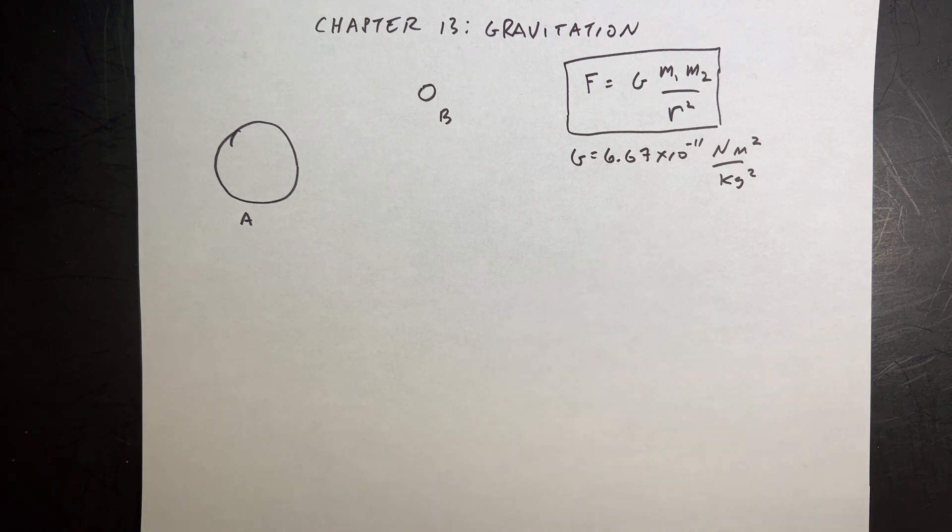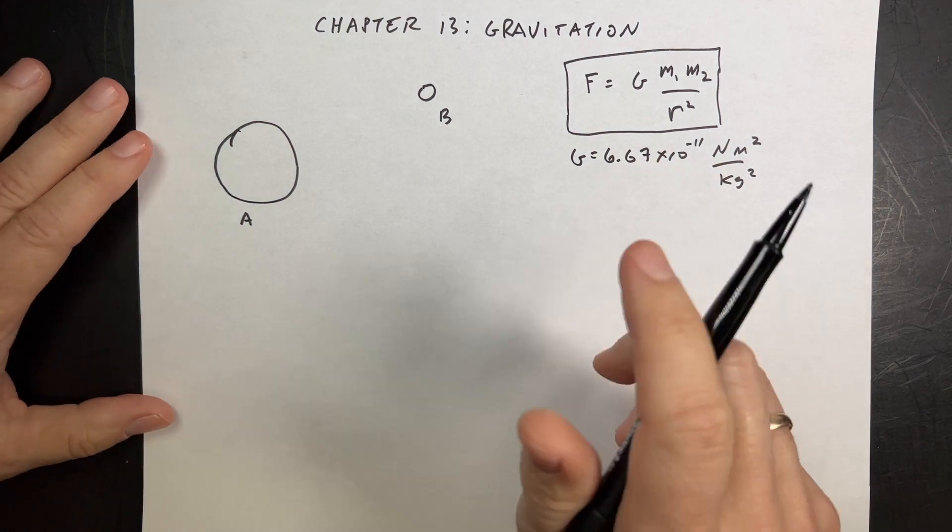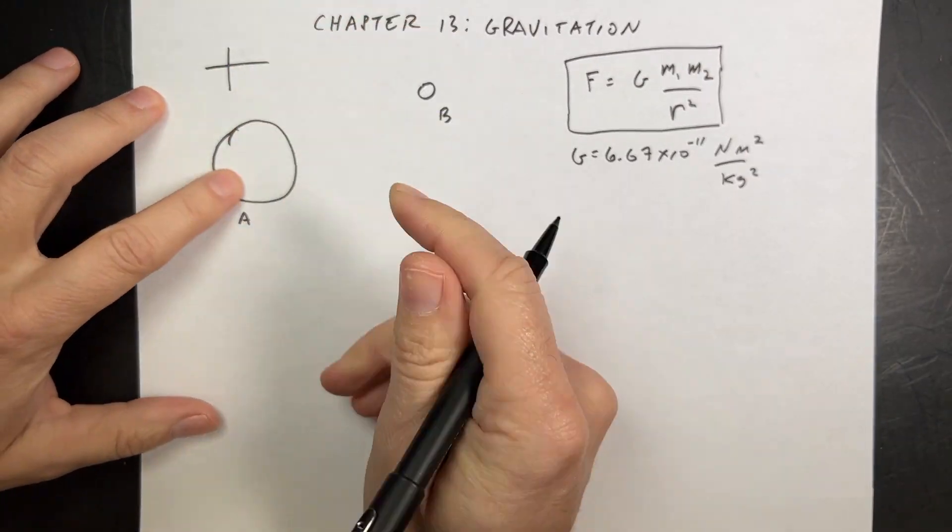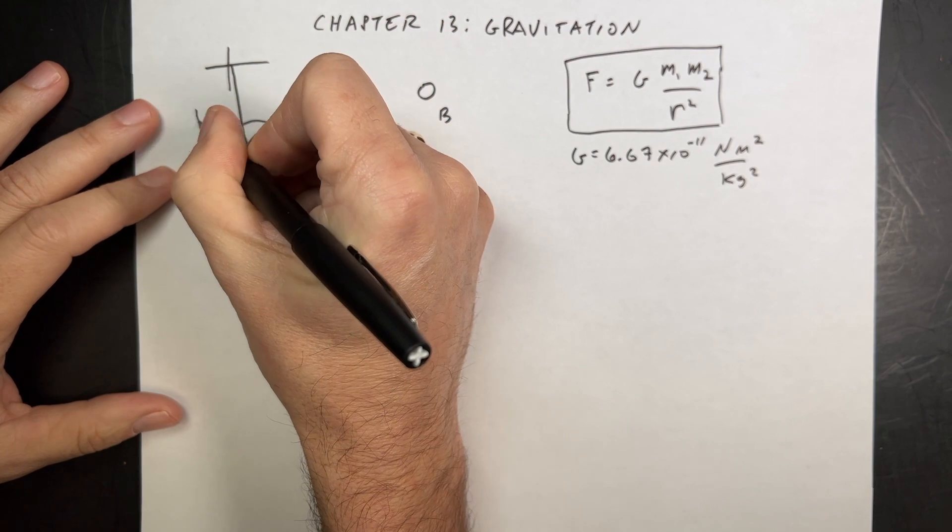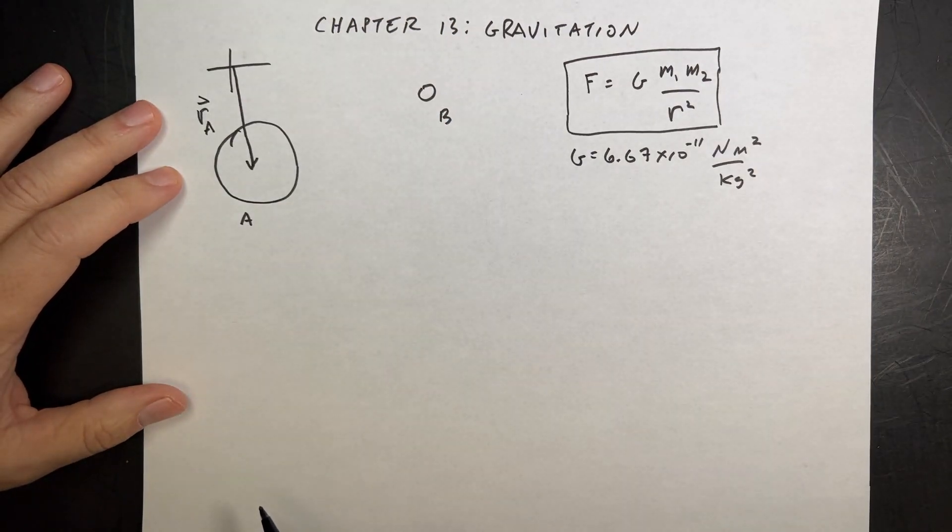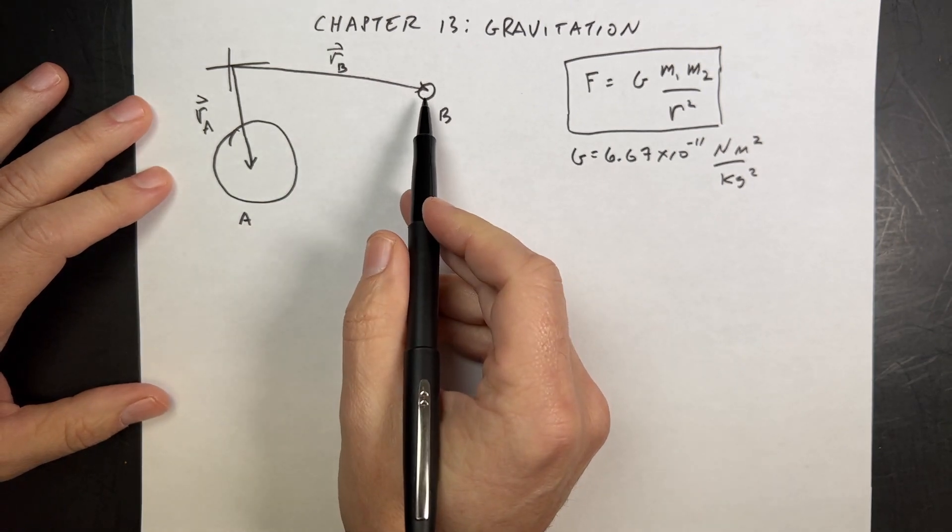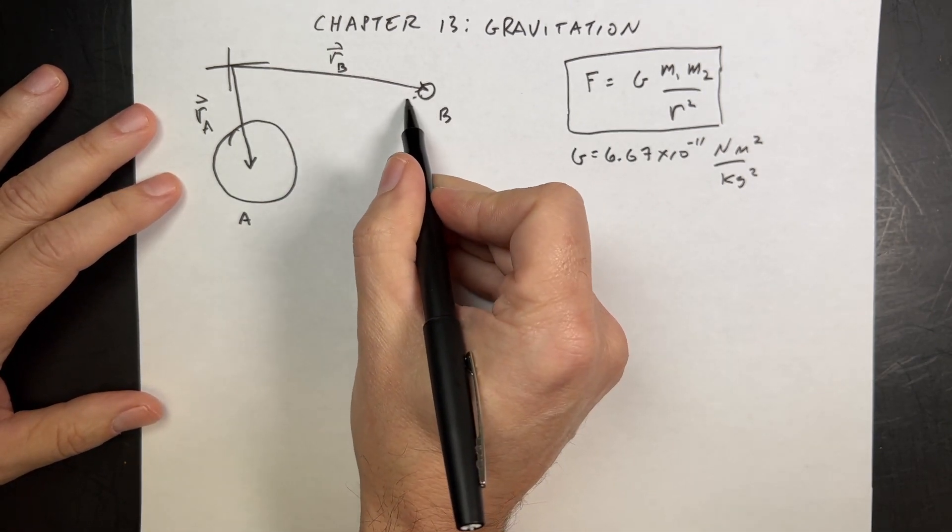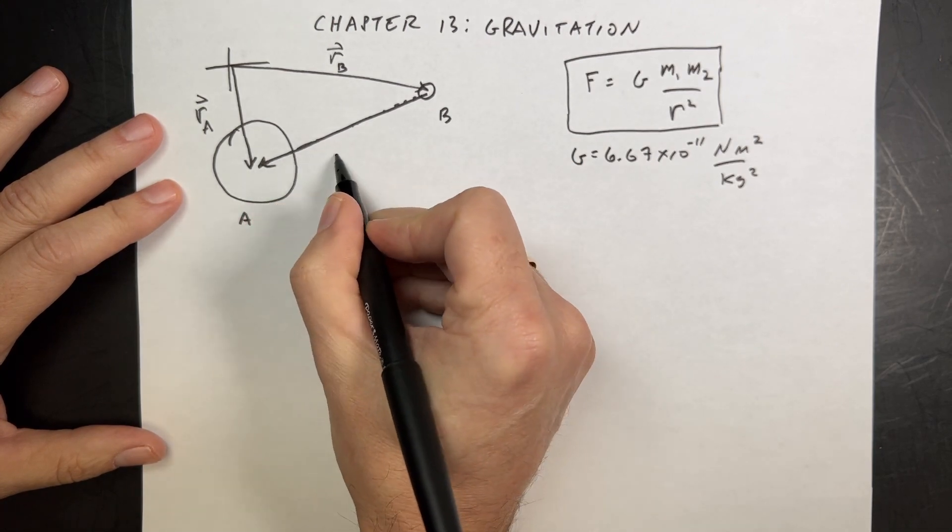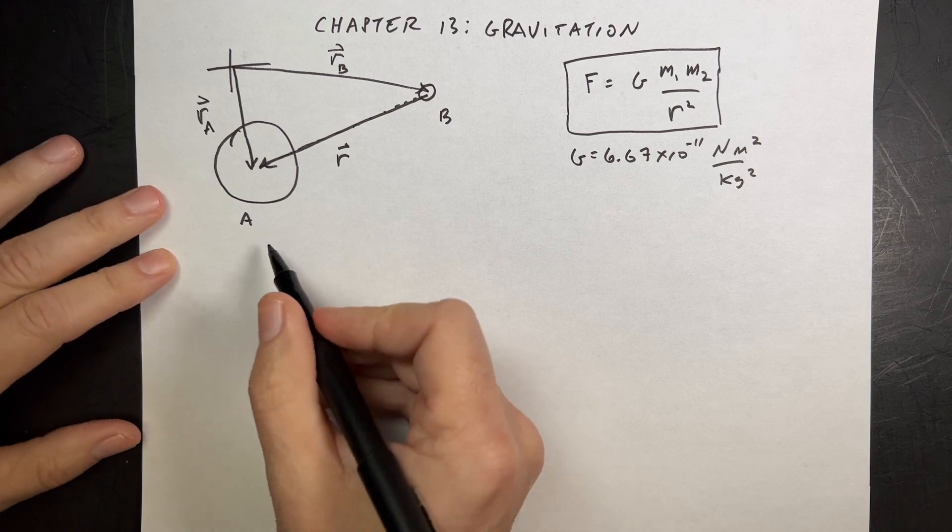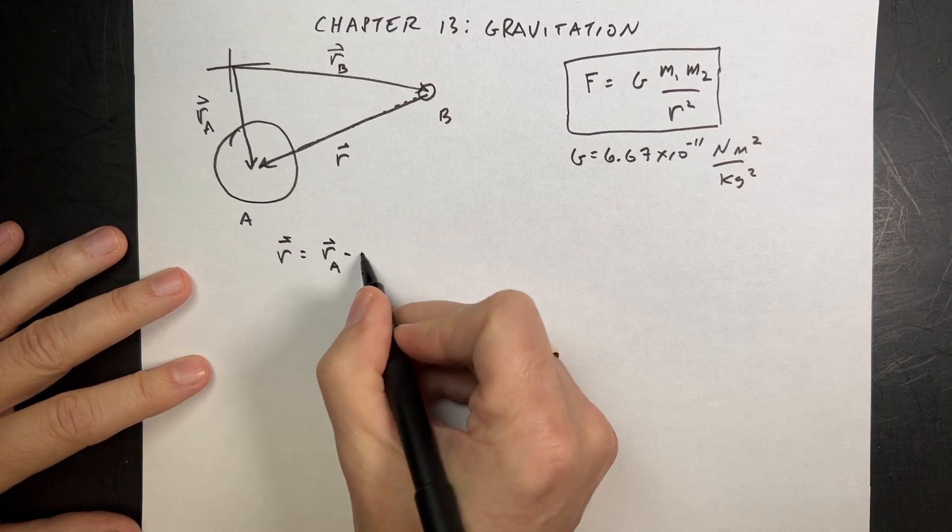That's a scalar version of the equation. We can make it a vector if we choose to, and I choose to. Let's put my origin right here. I have two masses, A and B. They have mass MA and MB. I'm going to call this RA, that's the location of the center for object A, and this is RB. Let's say I want to calculate the gravitational force on B.